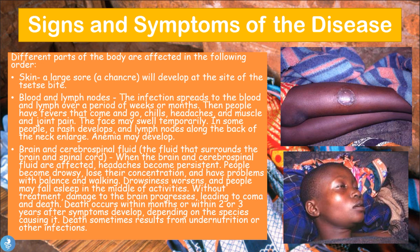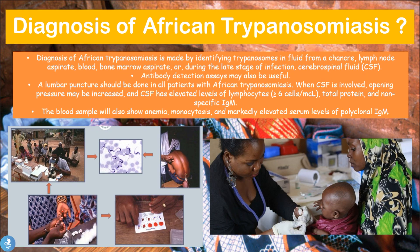Diagnosis of African trypanosomiasis is made by identifying trypanosomes in fluid from a chancre, lymph node aspirate, blood sample, bone marrow aspirate, or in the late stage, in the CSF. Samples may be taken from these various sources and examined microscopically to look for the T. brucei parasites. The disease can also be diagnosed by antibody detection assays.